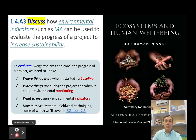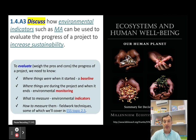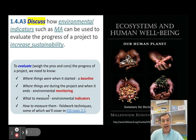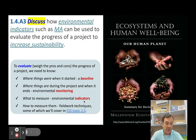You may be tasked to evaluate or discuss how environmental indicators, such as those from the Millennium Assessment, can be used to measure the progress of a project or how sustainably something is happening. If you're going to evaluate something, you need to weigh the pros and cons. To look at the progress of a project you need to know where it started — that's your baseline study — where things are during and after the project — that's your environmental monitoring — what to measure — those are your environmental indicators — and how to measure them. We'll get into some of those when we get into topic 2.5, investigating ecosystems.